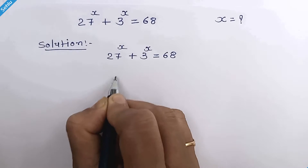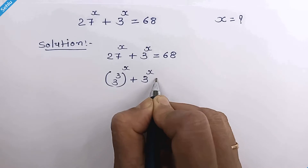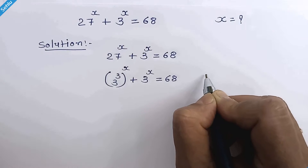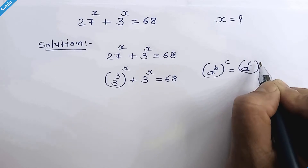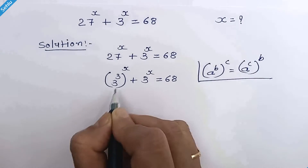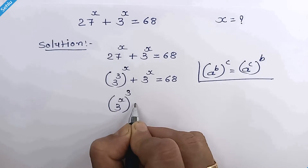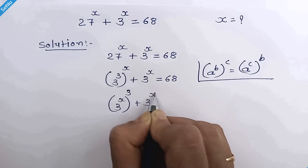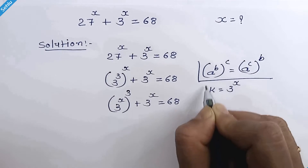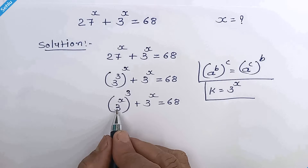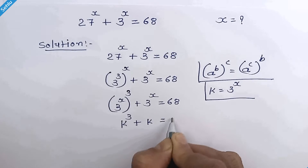27 is 3 cubed. When we have a raised to b, whole raised to c, then it can be a raised to c, whole raised to b. So this part can be written as 3 raised to x, whole cube, plus 3 raised to x is equal to 68. Now let's take k in place of 3 raised to x. So we have k cubed plus k is equal to 68.